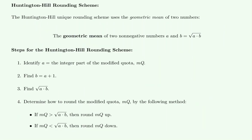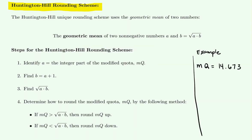For the Huntington Hill rounding scheme, the first step is to find A, the integer part of the modified quota. For example, suppose for one category you found the modified quota to be 14.673. Step one tells us to find A, which is the integer part of the modified quota. So A here is 14.